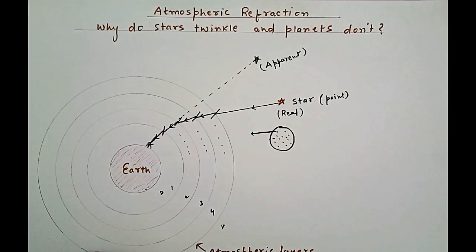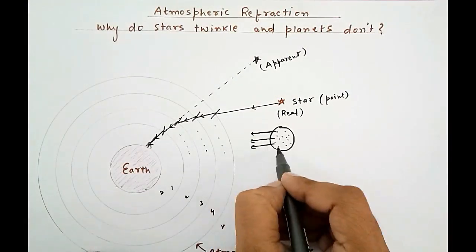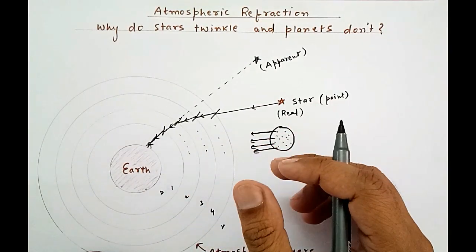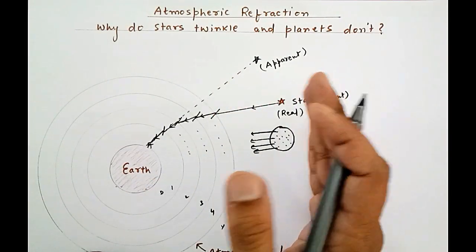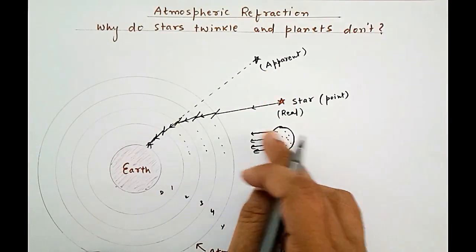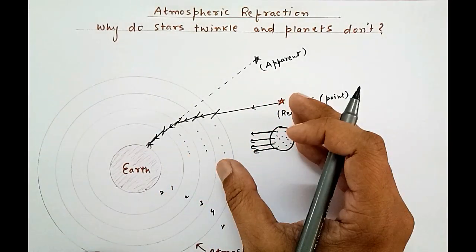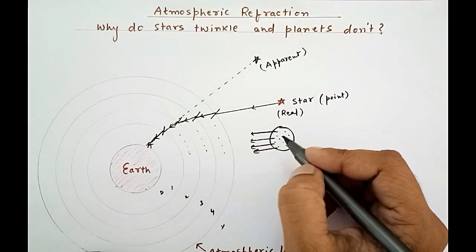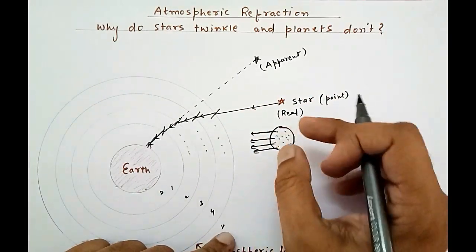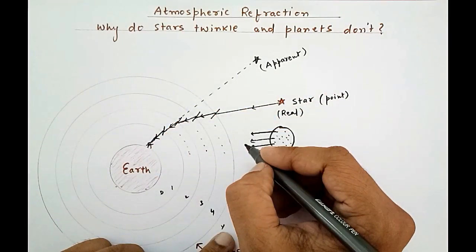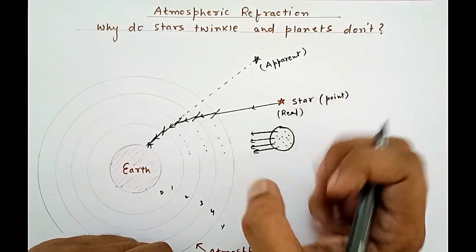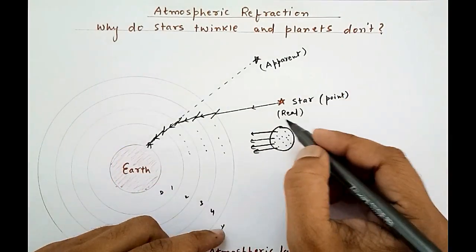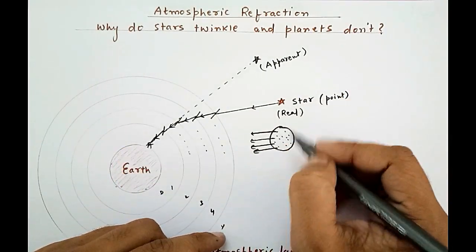Lots of light coming from a planet reaches the surface of the earth. Even though some of the light gets cut off due to atmospheric turbulence, since the planets are nearer, we do not feel the total cut-off effect. Because they are comparatively much nearer, lots of light still comes through. Even though some light goes away, we don't feel any kind of twinkling effect. Due to the distance factor, we do not find planets to be comparatively twinkling.